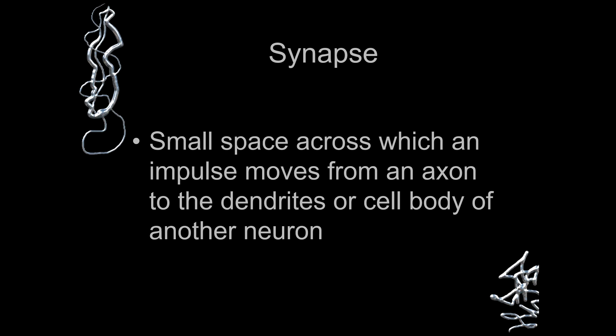Synapses are also called small spaces across which an impulse moves. There is some space required for an impulse to move from an axon to the dendrite or the cell body of another neuron. We can term this as a neural network, which is what we will be studying in the coming tutorials, taking a closer look. Synapses are the small spaces through which axons move impulses toward the dendrites, considering this is the dense neural network created inside the brain.